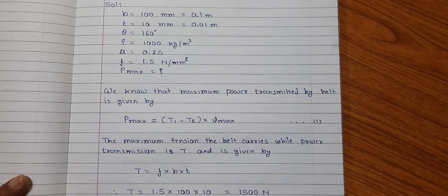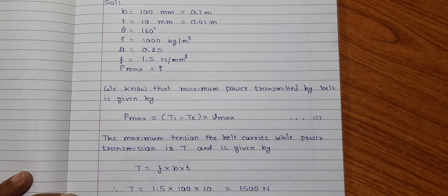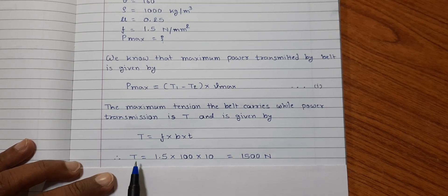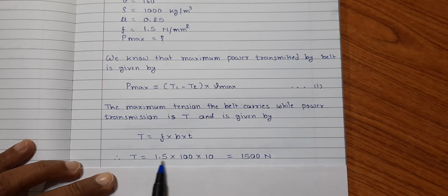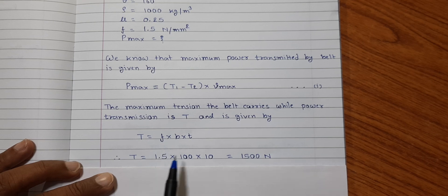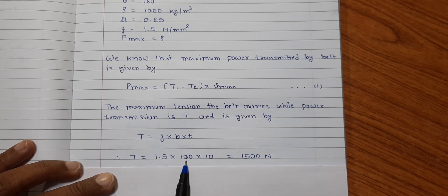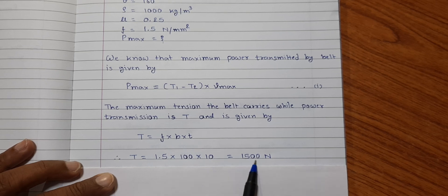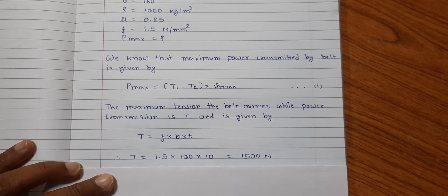On substitution of values, T = 1.5 × 100 × 10 = 1500 Newton.